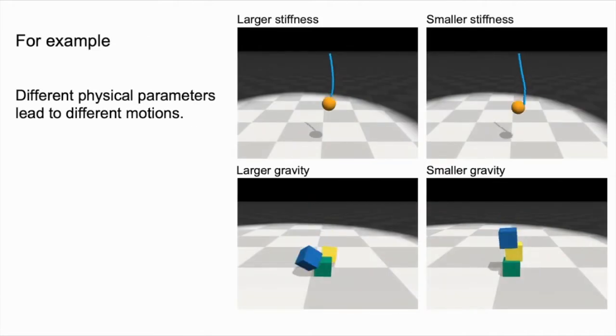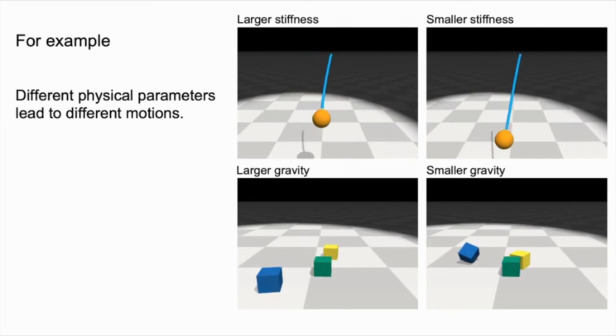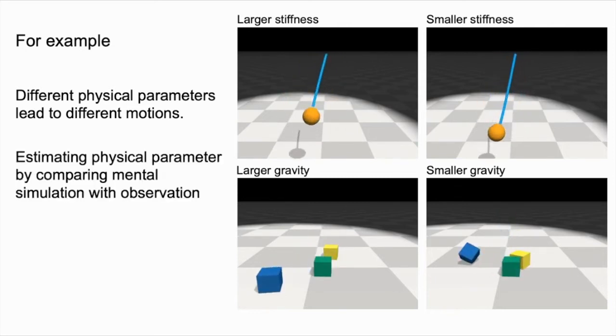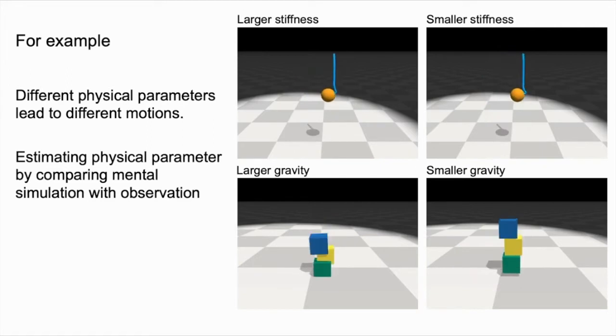Let me give you an intuitive example. Different physical parameters can lead to drastically different behaviors, like the softer rope will be more bouncy. The boxes will fall faster if the gravity is larger. Humans can estimate the physical parameters and predict the future using the intuitive physics engine in our brain. If the prediction does not match the observation, we can correct our estimation by minimizing the discrepancy between our mental simulation and the actual observation.